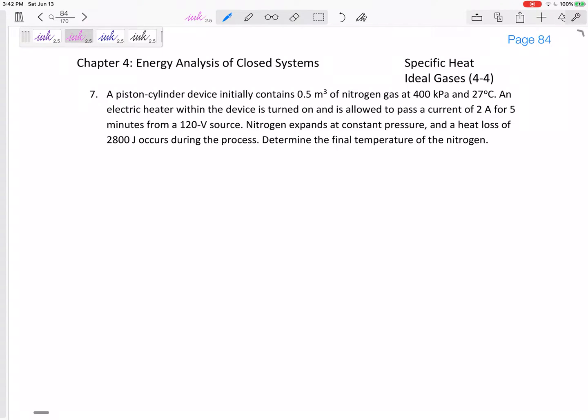Alright, so a piston-cylinder device initially contains 0.5 cubic meters of nitrogen gas at 400 kPa and 27 degrees C. An electric heater within the device is turned on and passes a current of 2 amps for 5 minutes from 120 volts. Nitrogen expands at constant pressure with a heat loss. We've got just about everything. We want to determine the final temperature of the nitrogen.